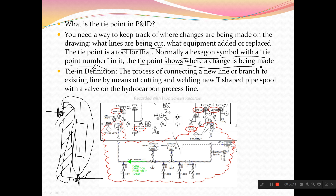Whichever existing lines are connecting to your equipment nozzles — those nozzles and lines will become tie points. Normally, a hexagon symbol with a tie point number in it shows where the change is being made. Wherever you see a hexagon symbol in the P&ID, it means a new line is being added to your existing line. The definition: the process of connecting a new line or branch to an existing line by means of cutting and welding a new T-shaped pipe spool with a valve on the hydrocarbon process line.